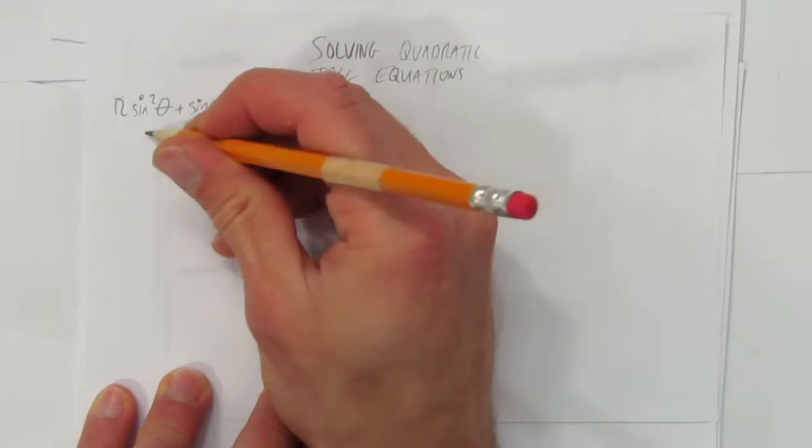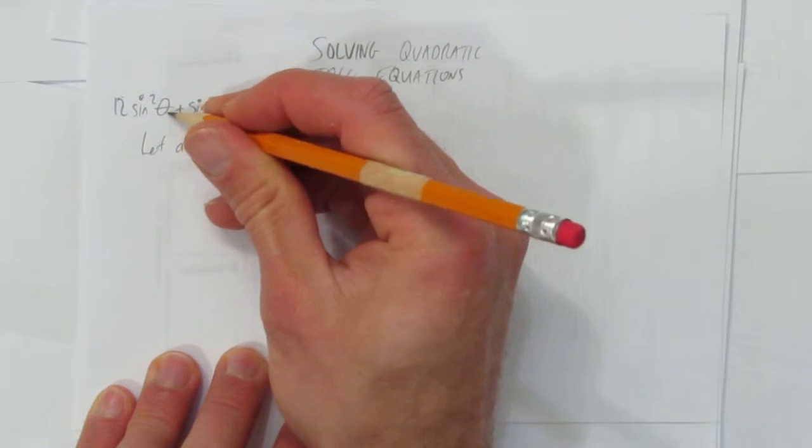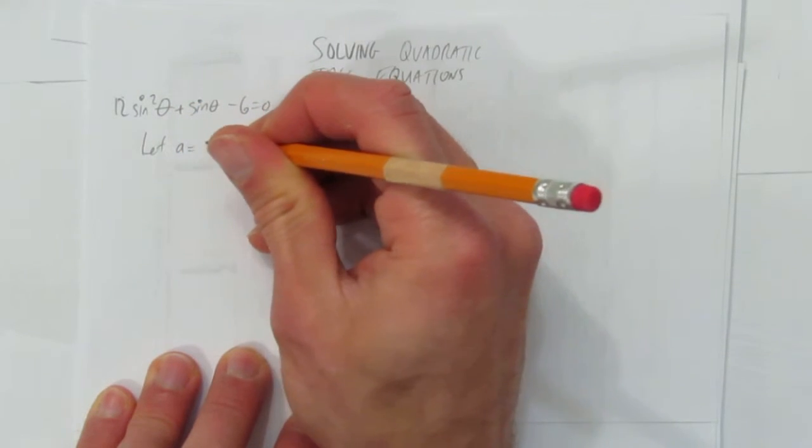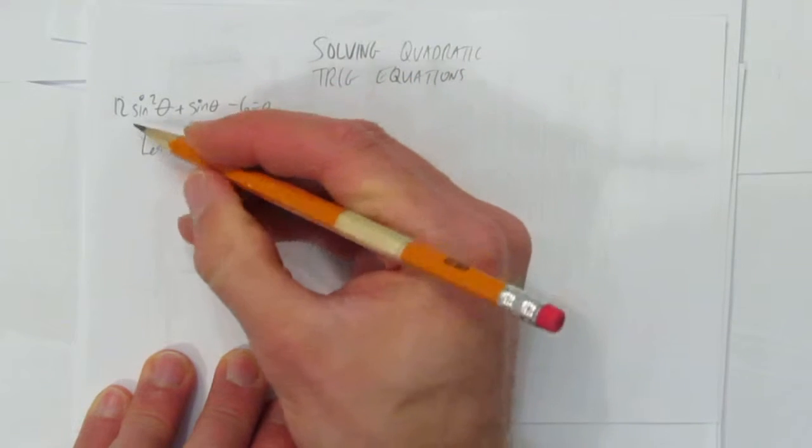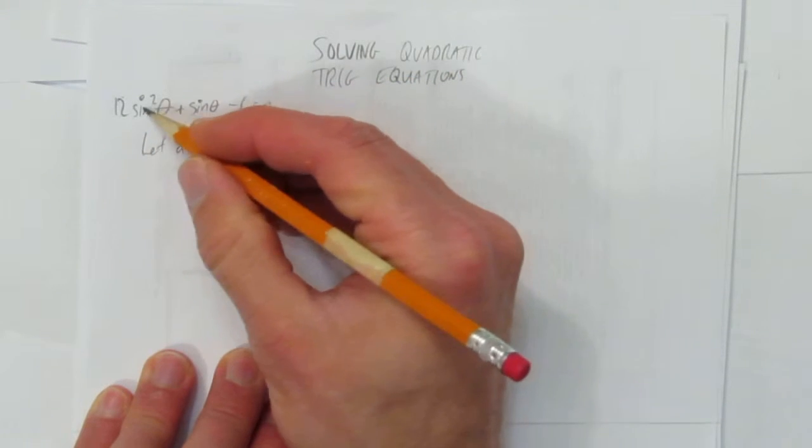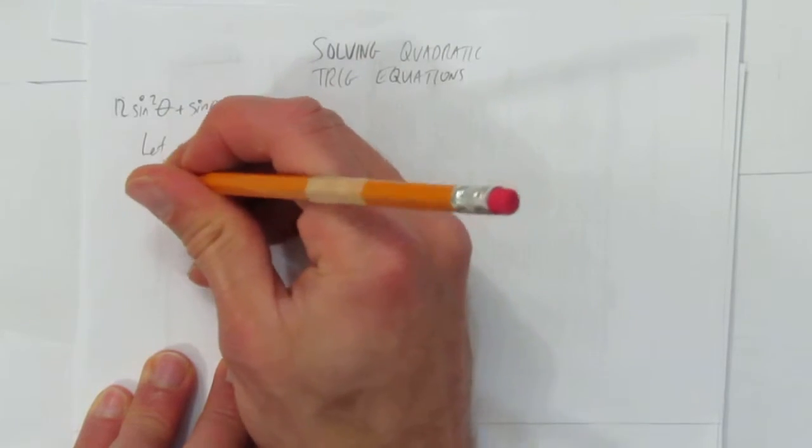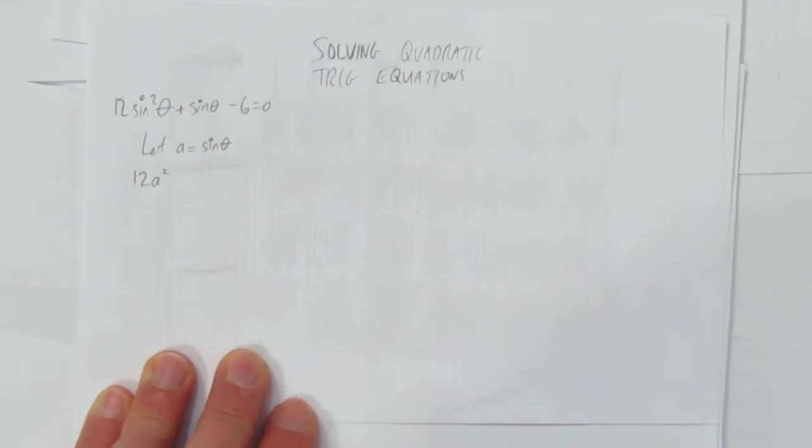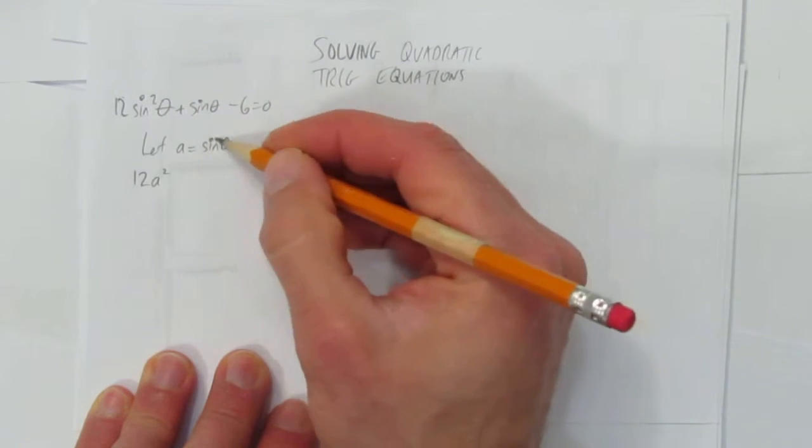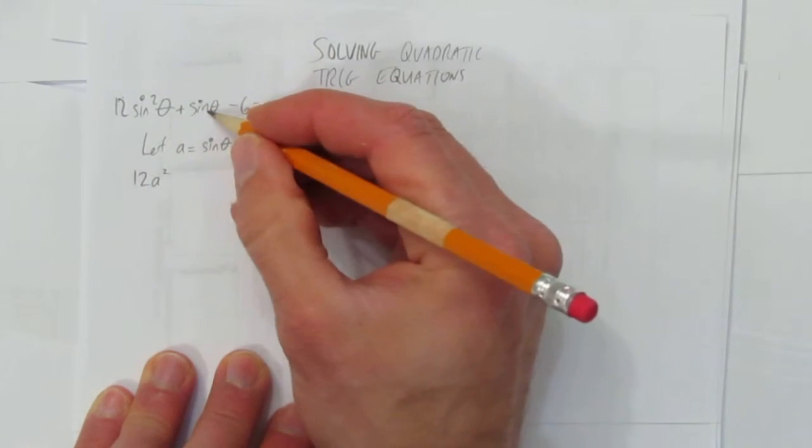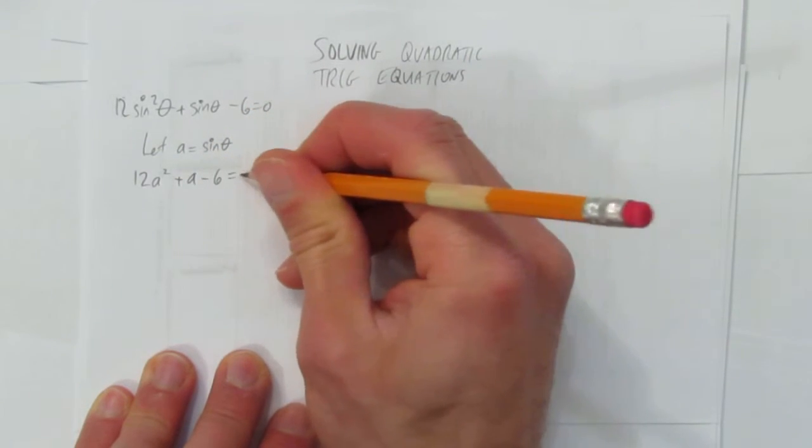So my favorite thing to do is right away start by substitution and say, let's call sine theta a. So let a equal sine theta. Why is that good? Because then this is just 12 sine squared theta, which is the same as sine theta squared, which means this is just 12a squared. Sine theta squared, that's just the same as, call sine theta a, that's just a squared. Sine theta is a, so that's just plus a, minus 6 equals 0. Now we have a nice quadratic.